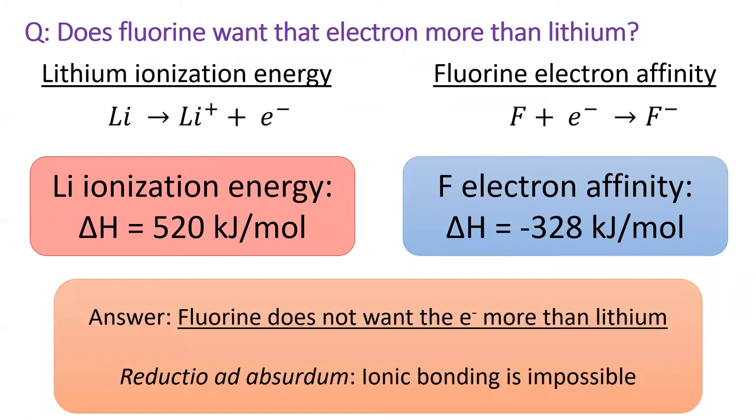However, fluorine's electron affinity is less than lithium's ionization energy. In other words, fluorine does not want an extra electron more than lithium wants to keep its electron. If we take this to its logical extreme, we would conclude that ionic bonding is impossible because the electron affinity of nonmetals cannot overcome the ionization energy of metals.